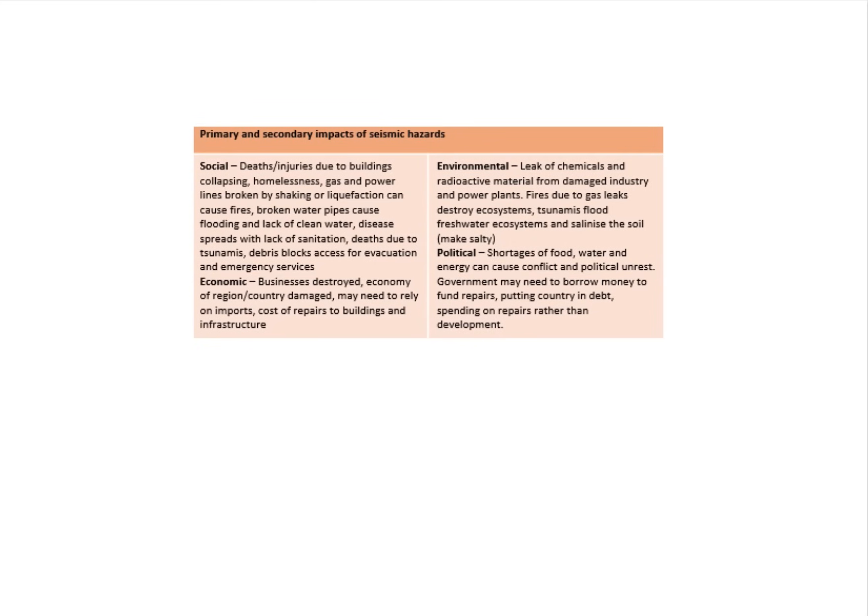So a bit like we did before with volcanoes, I can do exactly the same thing now for earthquakes. I can start to group these into those four familiar categories. In the exam, if worse came to worst, you'd start thinking generically about exactly what could the impact of an earthquake be if it happened right now. Those things there would start to give you some basic AO1 marks, especially in those 9 and 20 markers.